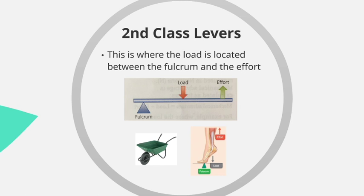In terms of the human body and sport, a brilliant example of a second class lever is at the ankle. The fulcrum is the ball of the foot — the joints between the tarsals and the phalanges. The load is your body weight acting downward. The effort is the gastrocnemius contracting to lift the heel and cause plantar flexion of the ankle. Examples include a ballerina walking on tiptoes, or a sprinter running off the balls of their feet to generate more force.